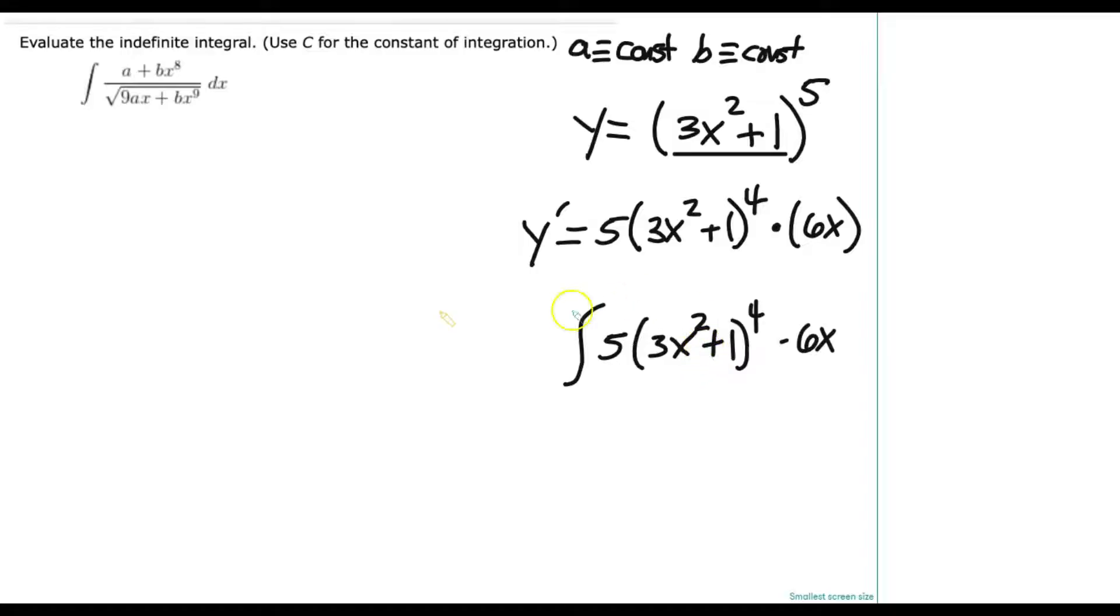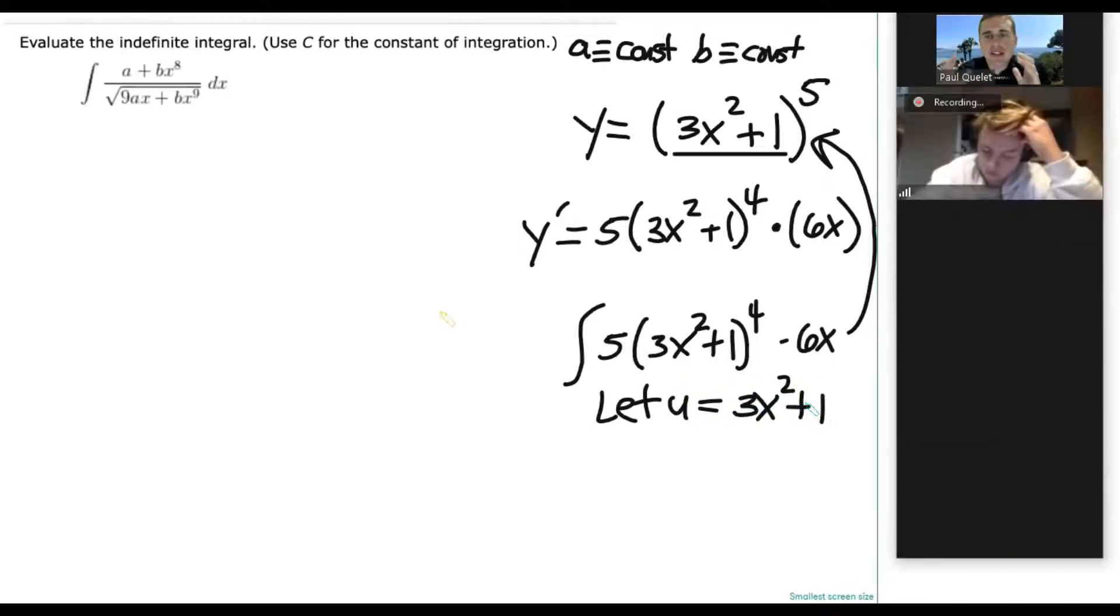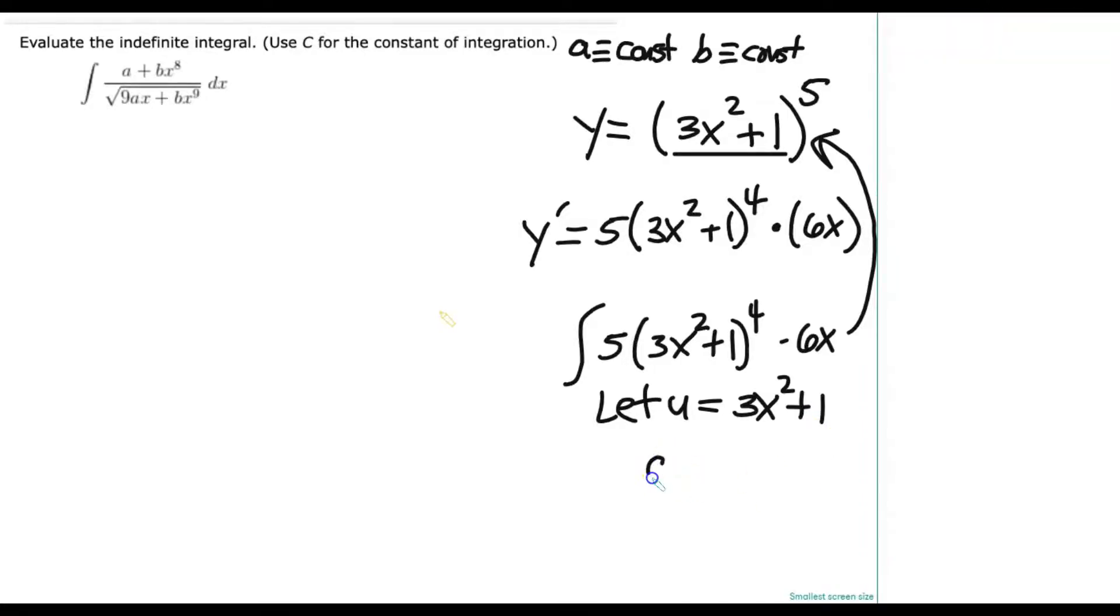In other words, what's that parentheses that sort of keeps carrying around? So it should hopefully be clear to you that if I integrate, that is, take the anti-derivative of 5 times 3x squared plus 1 raised to the fourth times 6x, it should hopefully be clear to you that you're just going to get exactly this function. But notice, that's because we would say, let u equal 3x squared plus 1, because that's the sort of lump, if you will. I like to think about just like a lump that keeps carrying around, that's in the parentheses.